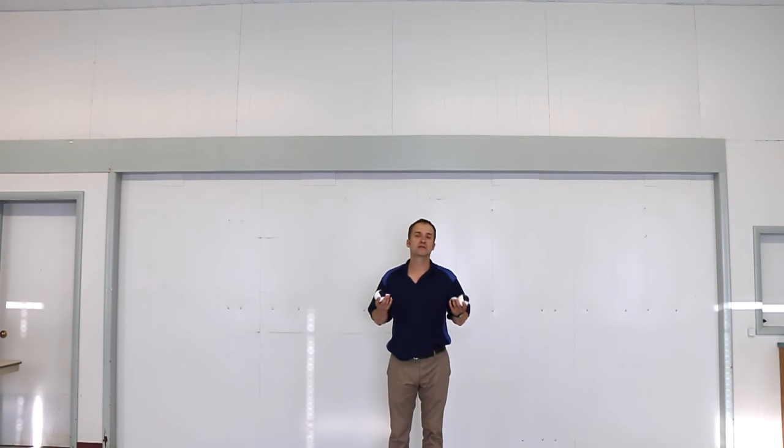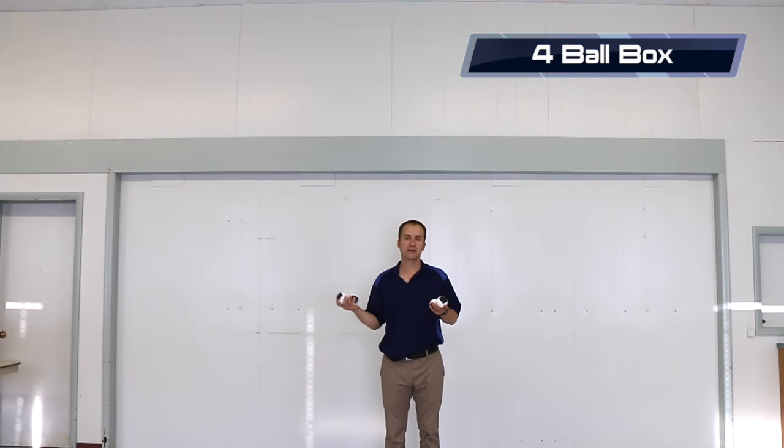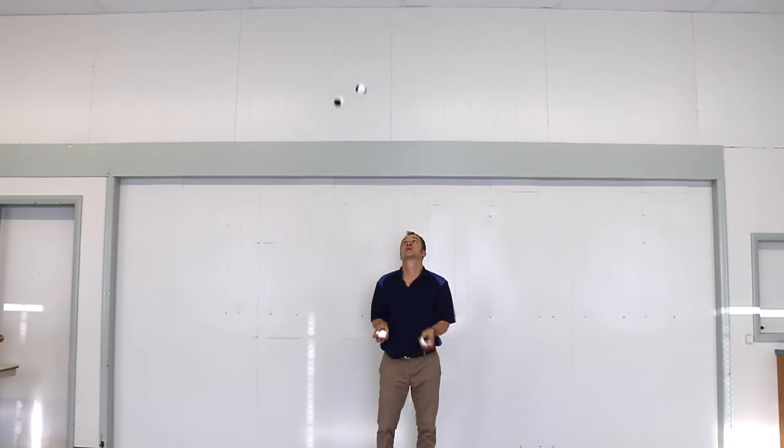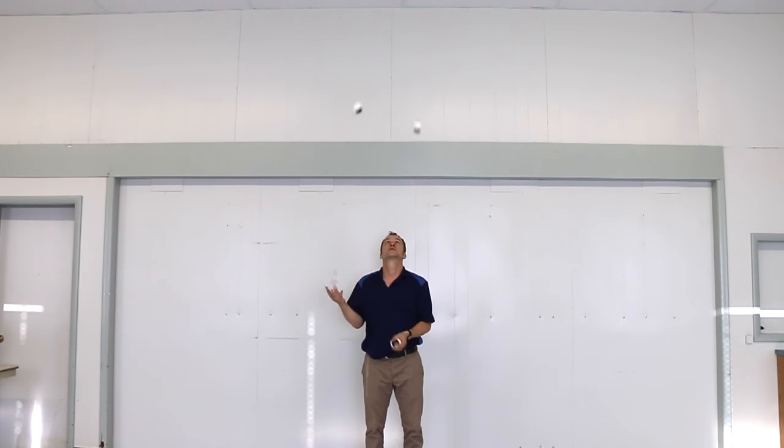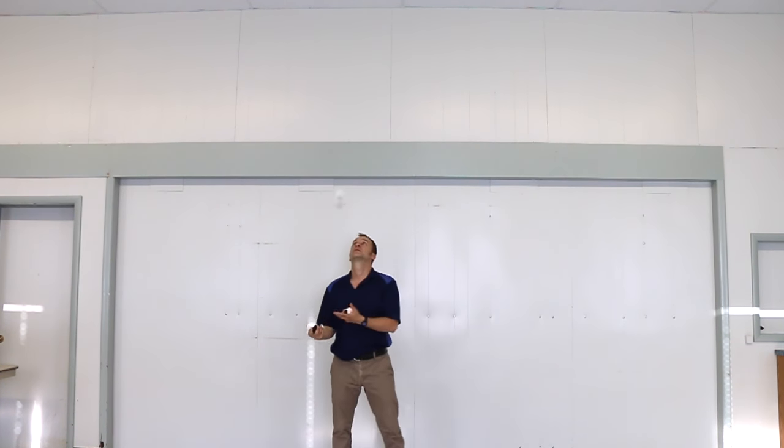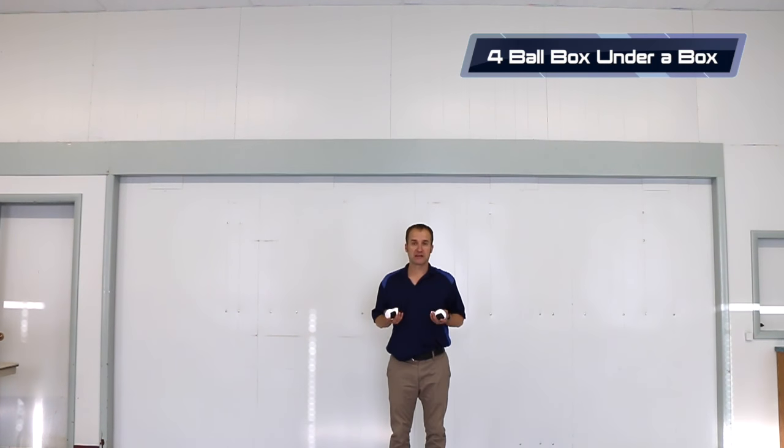If you've learned to juggle the shower in both directions, from the left or the right, now you can do a box. It's two throws to this side with a pass in between, then two throws on this side. Here's what it looks like. The box, the advanced version.